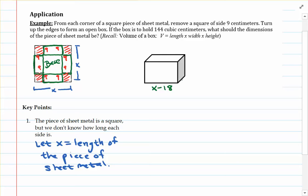Now, the other side length of the base of the box is going to be the same thing, because if you think about it, the other side of the square piece of sheet metal here started out as x, and we're again removing a nine centimeter length on one side and nine centimeter length on the other side. So the second length of the base of the box is also x minus 18.